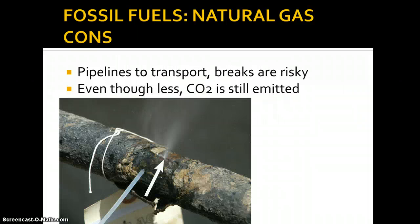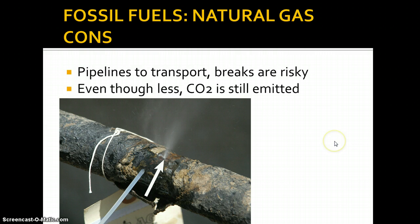The cons: we have to pipe natural gas to transport it, and these pipes are normally underground. The ground can be unstable, cracks can occur, and we can have natural gas leaks. They're highly flammable and risky. Even though natural gas emits less CO2, CO2 is still emitted, and CO2 is a greenhouse gas (GHG).